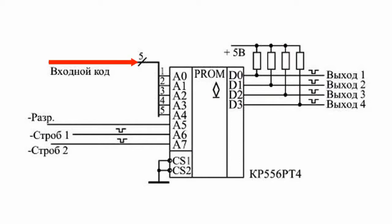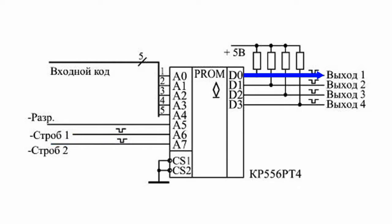The 5 digits of the input code are applied to the ROM address least significant bits A0 through A4. The enable input signal is connected to address input A5, the STOBE1 signal to the A6 input, and the STOBE2 signal to the A7 input.